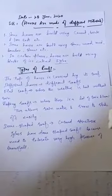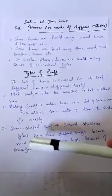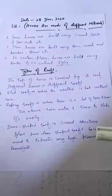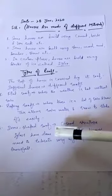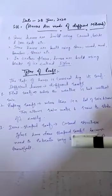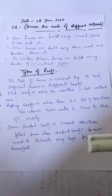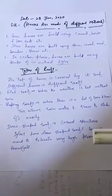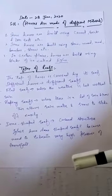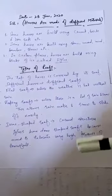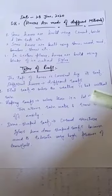Another type is the dome-shaped roof. Dome-shaped means curved structures — roofs in the form of a curve. For example, igloos have dome-shaped roofs. This shape is used because it needs to tolerate very high pressure from snowfall in areas where there is heavy snow.